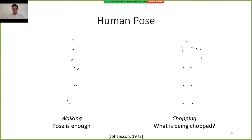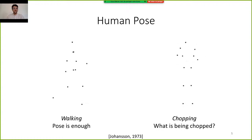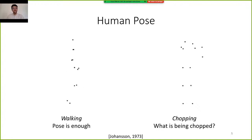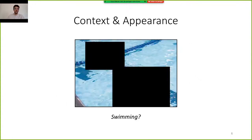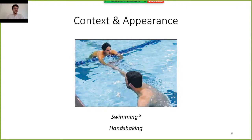Work from the 70s by Johansson has shown that by watching only moving lights attached to human joints, we can recognize basic human actions, indicating that human pose plays an important role for action recognition. However, sometimes it is not enough. For example, on the right side we recognize that a person is chopping something, but we do not know what is being chopped — so we need more information about appearance. But on the other side, appearance can be misleading. For example, you may want to say that a person is swimming given that the background is a swimming pool, but in fact the two persons are just handshaking.